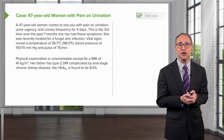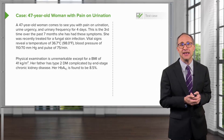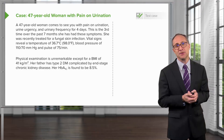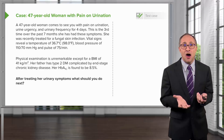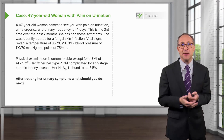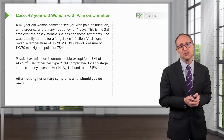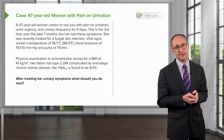Her hemoglobin A1c is found to be 8.5%. After treating this patient's urinary symptoms, what should you do next?